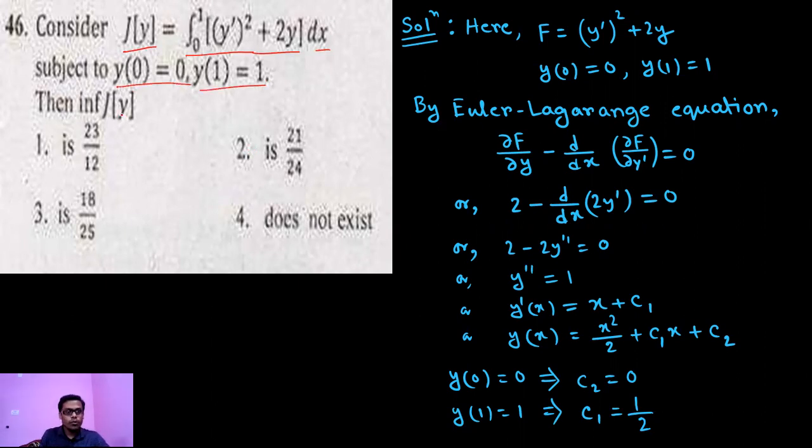Then we have to find out the infimum of j[y] and four options are given. First option is 23 by 12, second option 21 by 24, third option 18 by 25, and fourth option is infimum of j[y] does not exist.